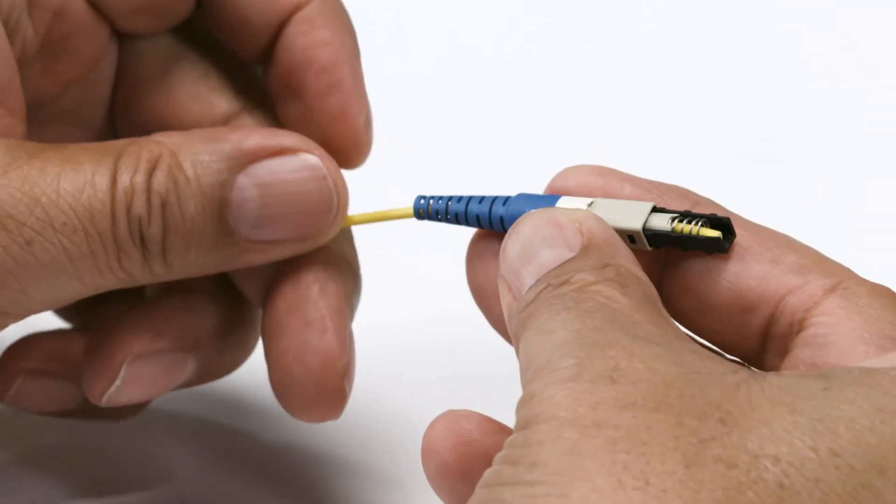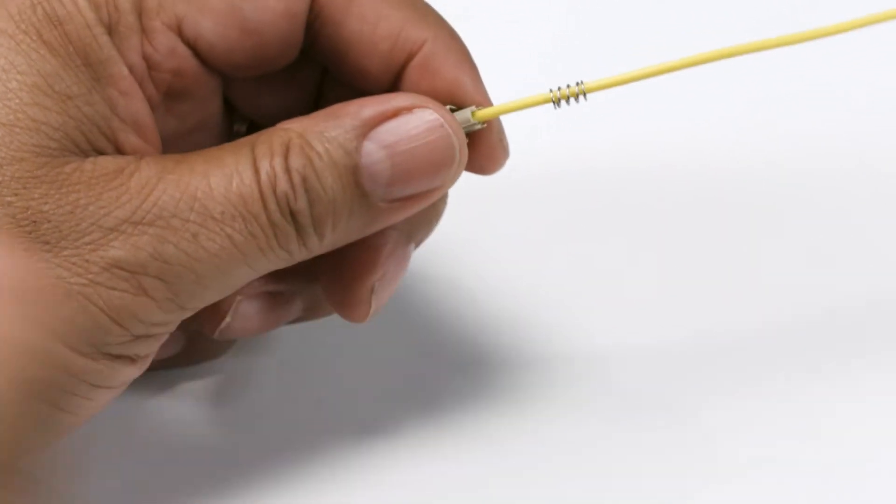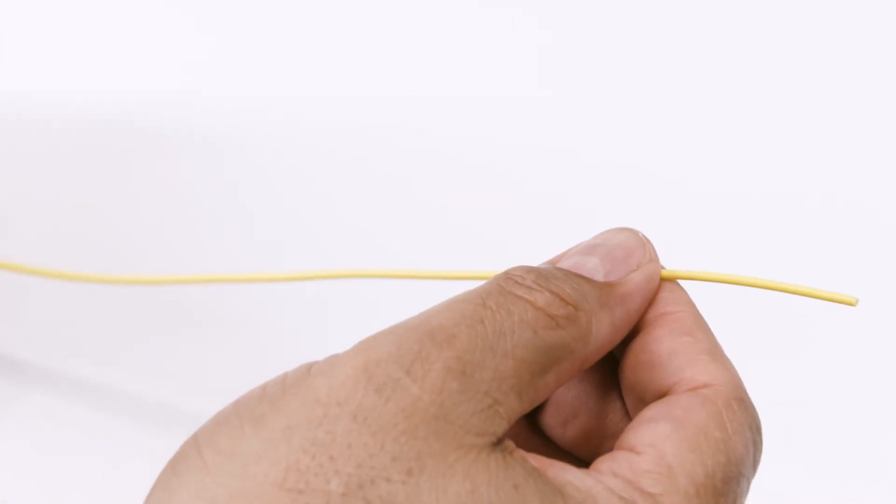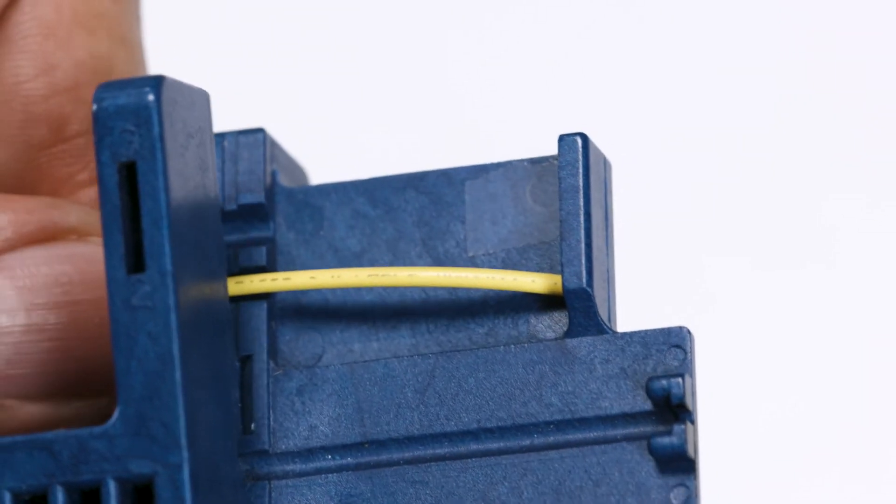To start cordage preparation, place all rear connector components on the cord. Remove the protective tube. Use the cord tool to remove specified length of cordage.